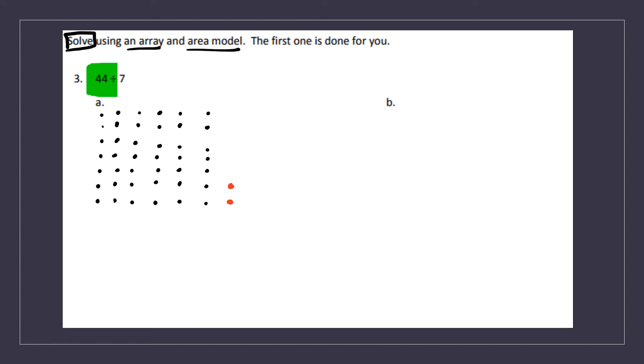So if I look at this problem, my final answer is 1, 2, 3, 4, 5, 6. I have 6 groups of 7 with a remainder 2.